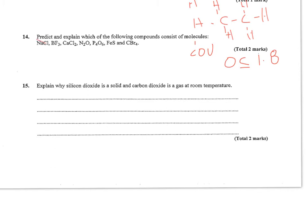So NaCl is going to be ionic. BF3 is going to be covalent. CaCl2 is ionic. N2O is covalent. P4O6 is covalent. Iron sulfide is ionic. And CBr4 is covalent. And again, the explanation is that it has to be between zero to 1.8 difference of electronegativity to be considered covalent.